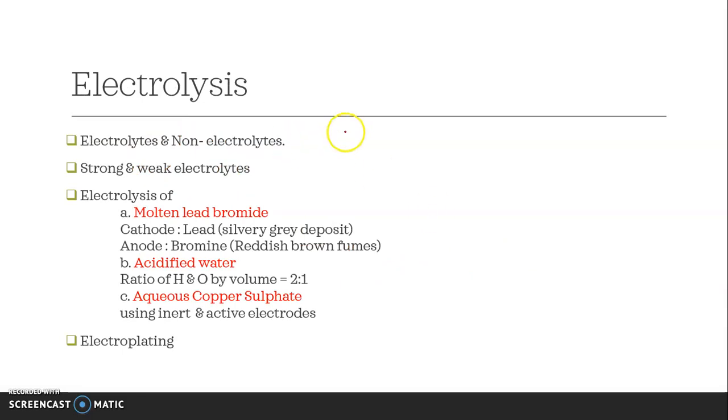From electrolysis: electrolytes and non-electrolytes, strong electrolytes and weak electrolytes. Always see their examples as well. Electrolysis of molten lead bromide, acidified water, and aqueous copper sulfate. In molten lead bromide, cathode deposits are lead - which color deposits, silver or gray deposits? At anode, bromine which has a reddish-brown fume. When you are studying a topic, understand what kind of questions can come. Don't just mug up the topic. From acidified water, ratio of H to O by volume is 2:1. Aqueous copper sulfate electrolysis using inert and active electrodes, and then electroplating. This is also very important.